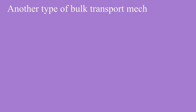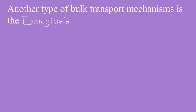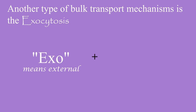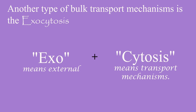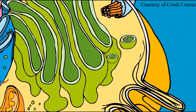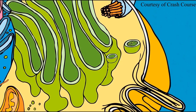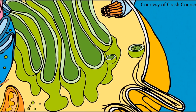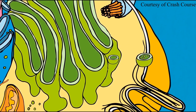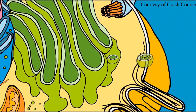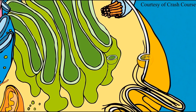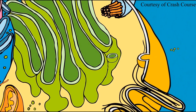Another type of bulk transport mechanism is exocytosis. 'Exo' means external and 'cytosis' means transport mechanisms. Exocytosis is a form of bulk transport in which materials are transported from the inside to the outside of the cell.